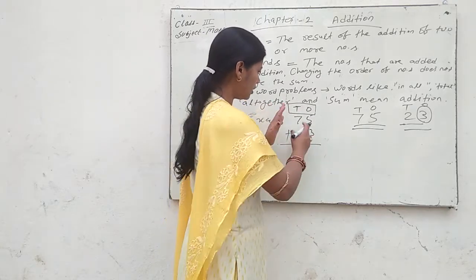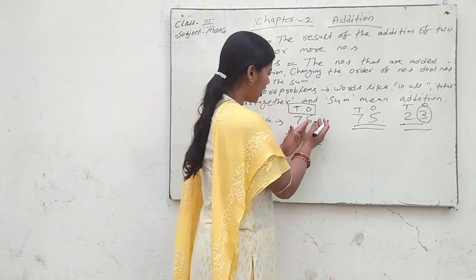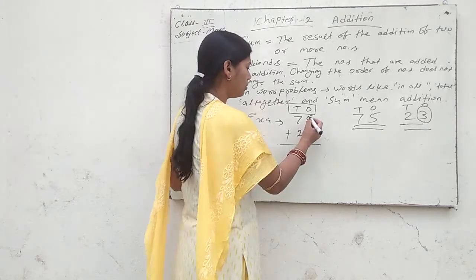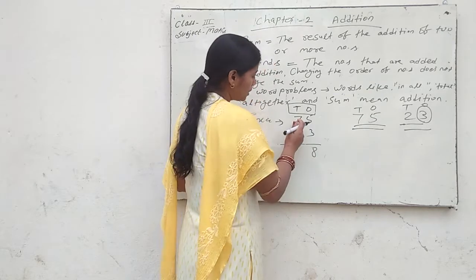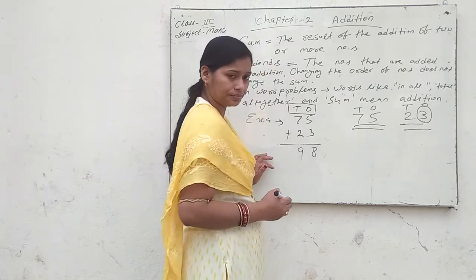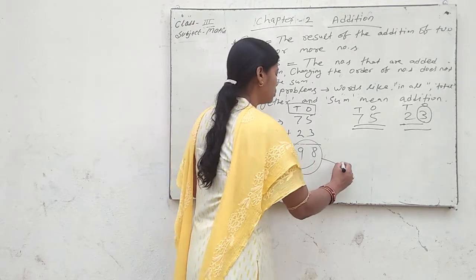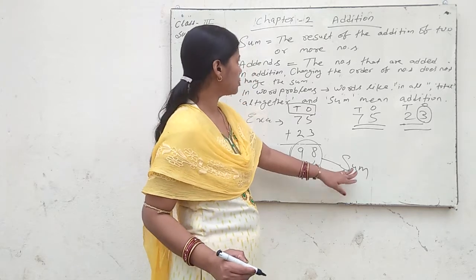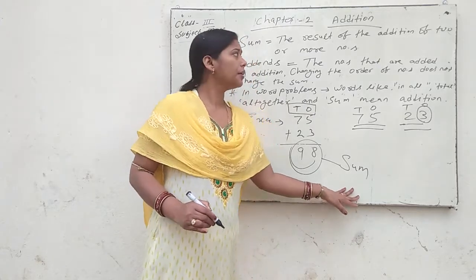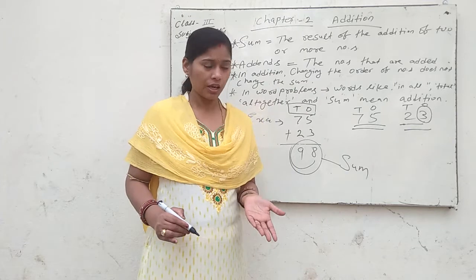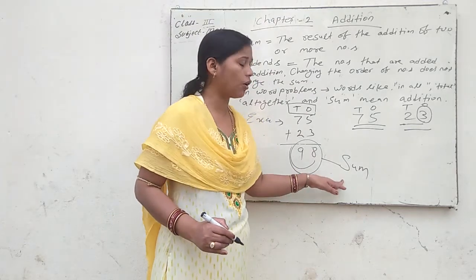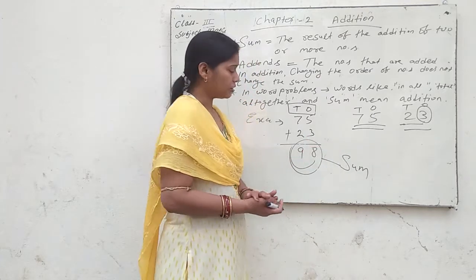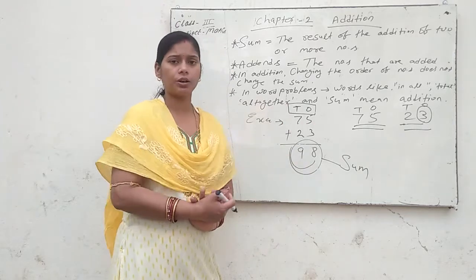Now you have written the digits according to their place values. The result is 98, and this is called your sum. Sum means the result of the addition of two or more numbers. The simple way to say it: sum means the result of addition.